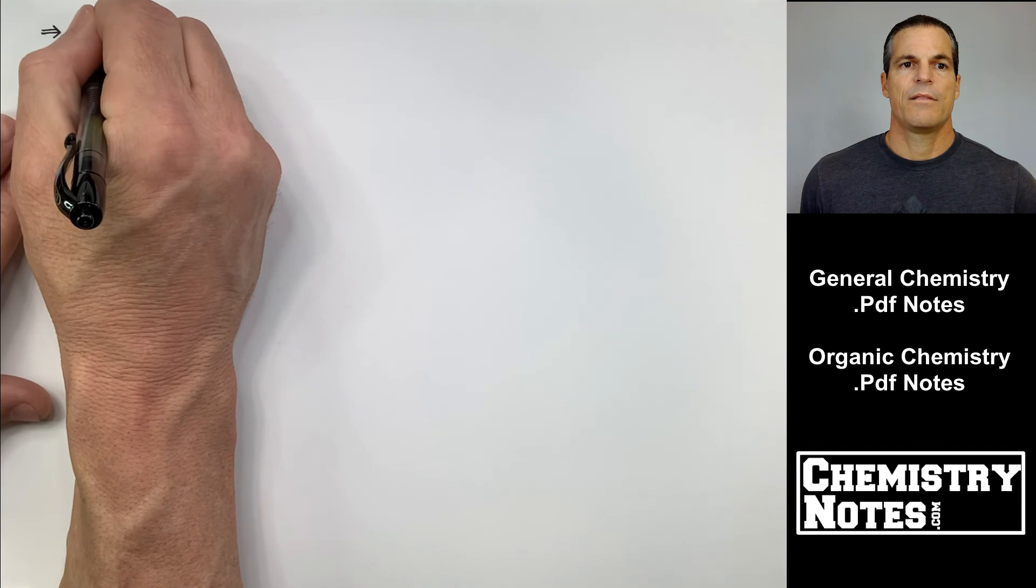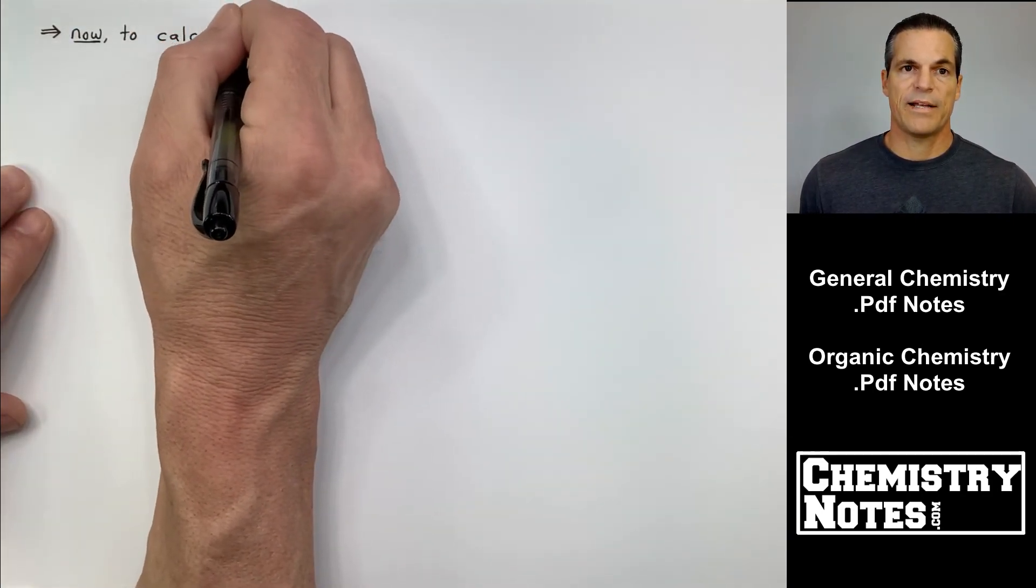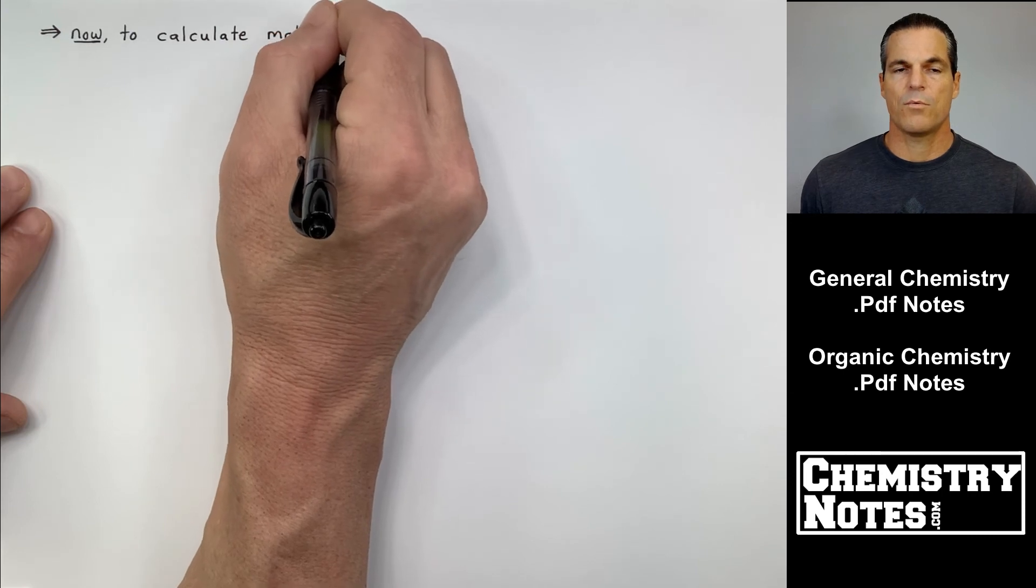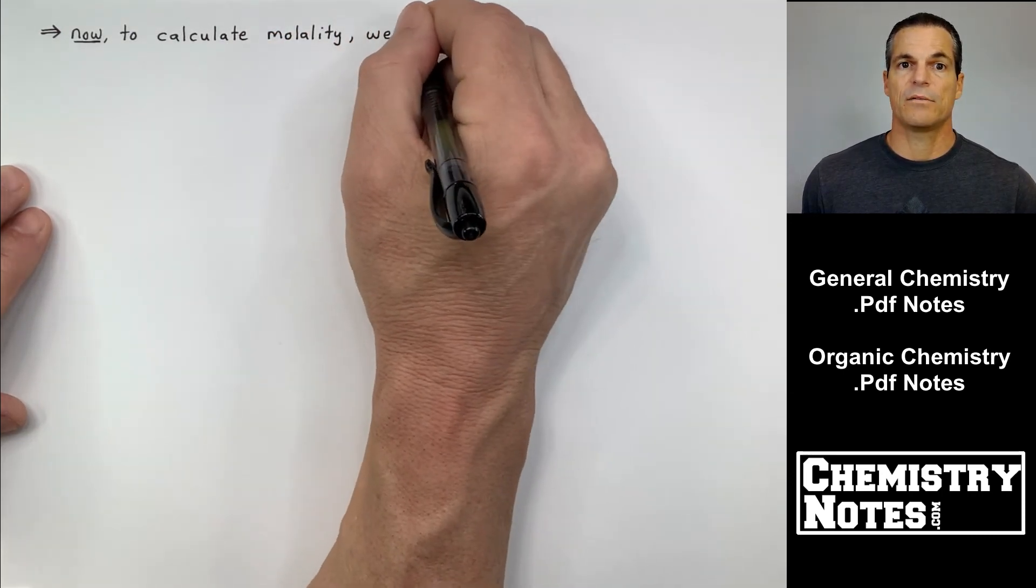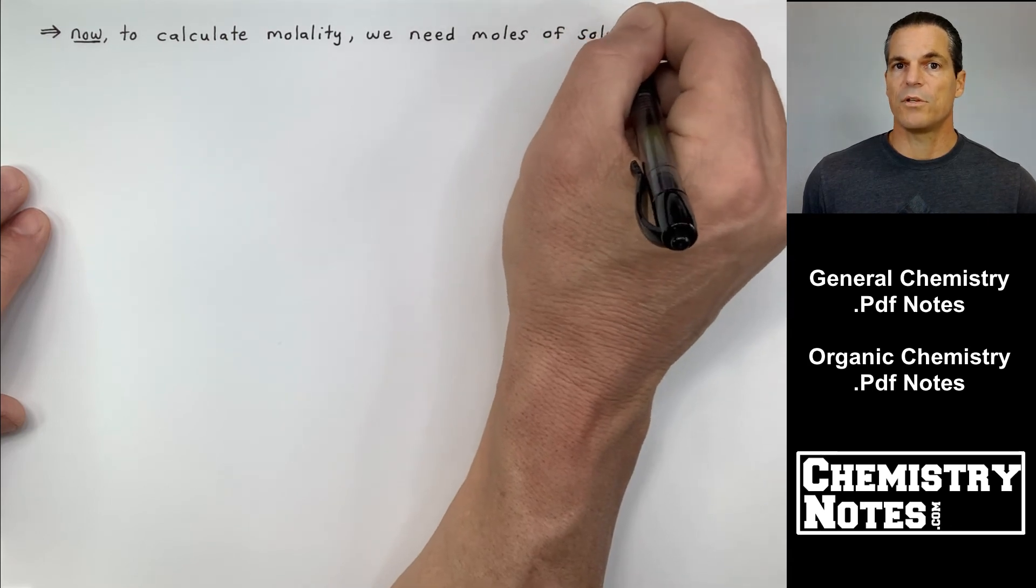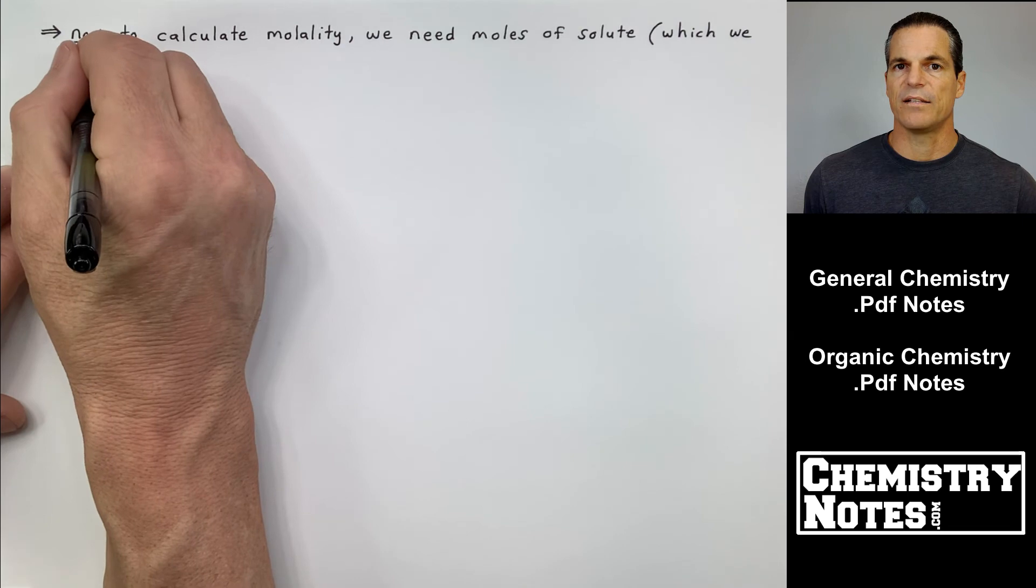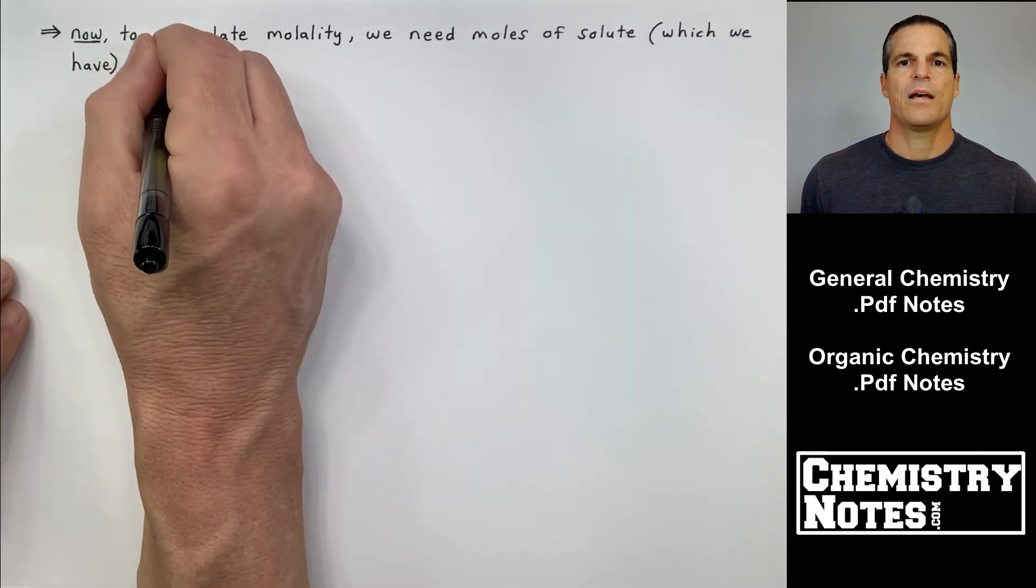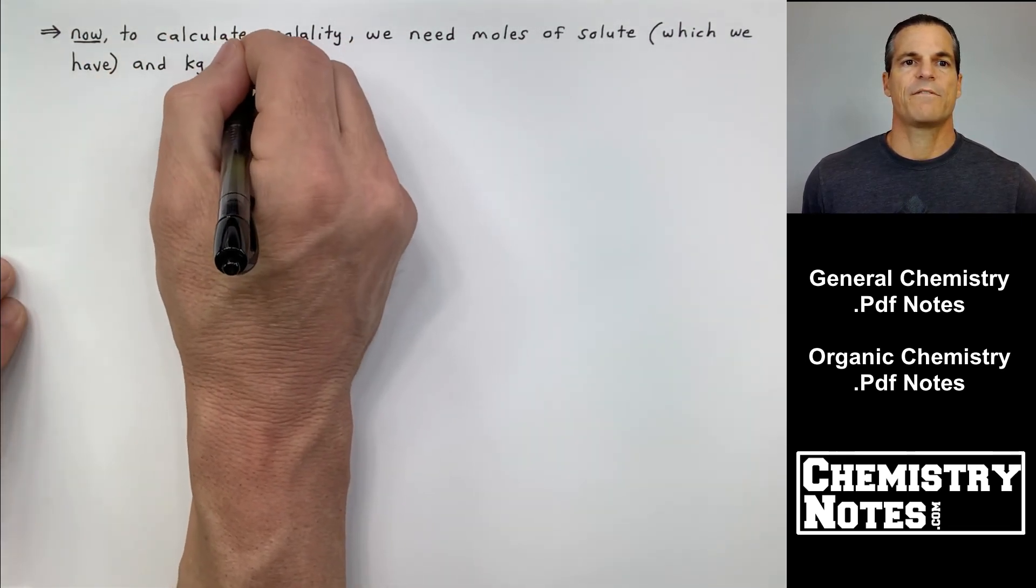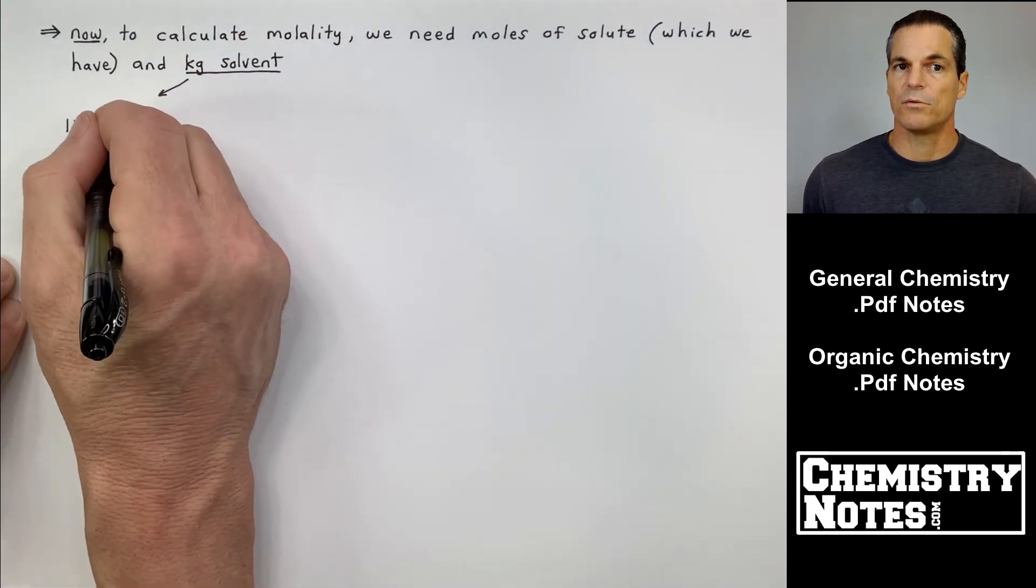Now that is the mass percent, but they also want us to calculate molality. So for molality, remember that's moles of solute per kilogram of solvent. We have to find kilograms of solvent and we have moles of solute.